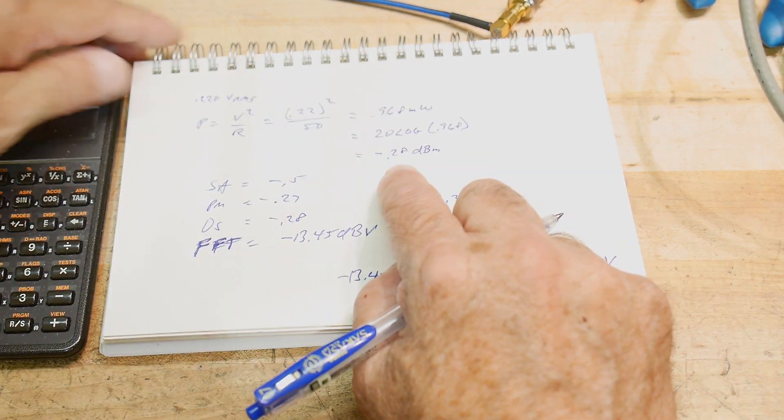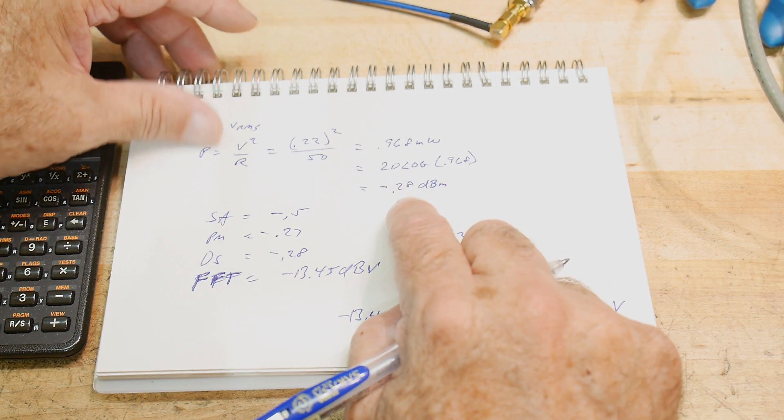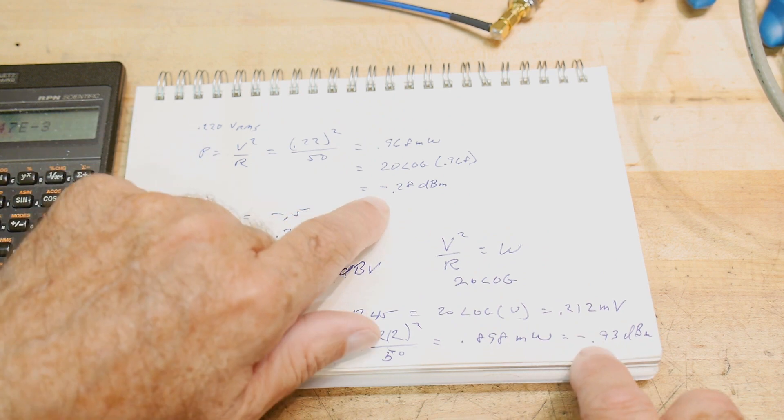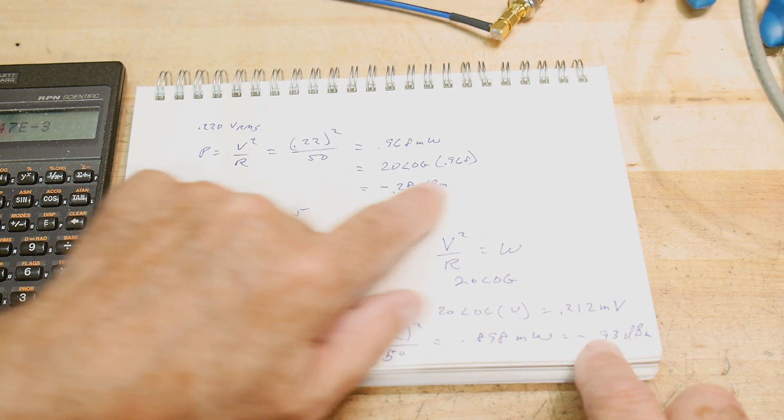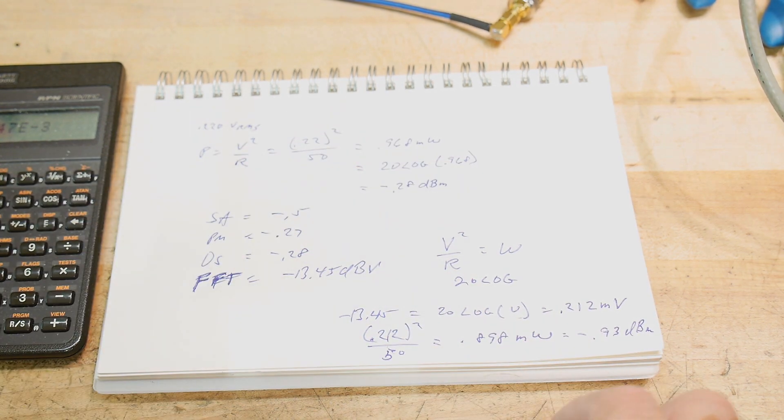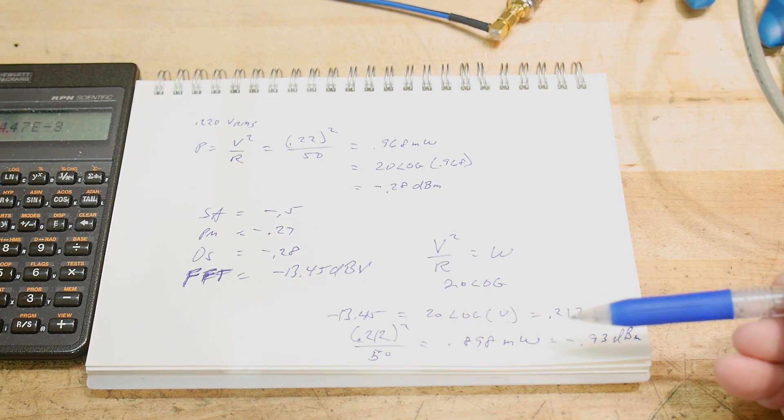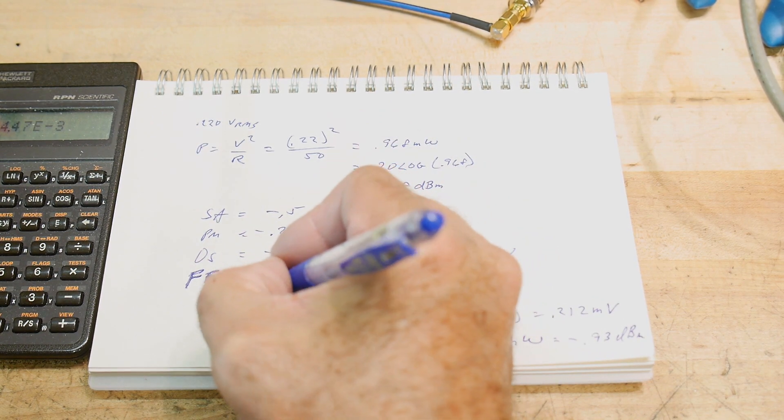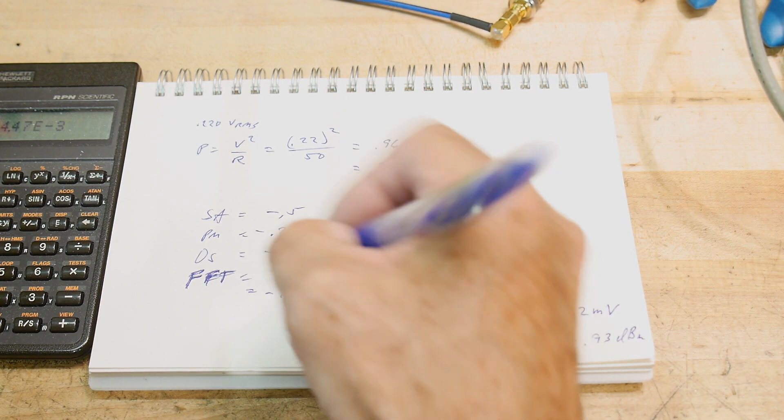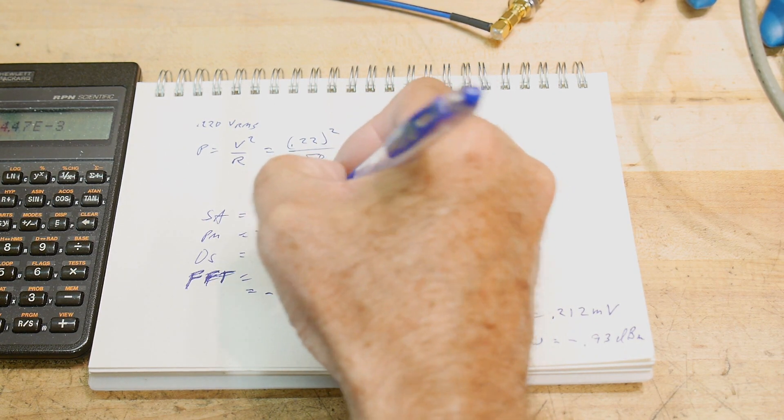We were measuring minus 0.28 and now we're measuring 0.93. So we're getting a little bit lower because we went from 0.9 milliwatts to 0.8 milliwatts. I'm sure I confused the heck out of that. But what we've been showing here, minus 0.93 dBm.